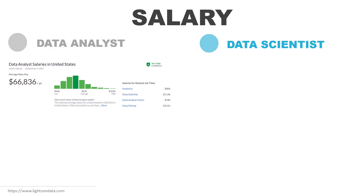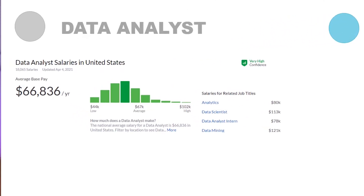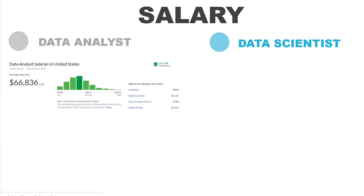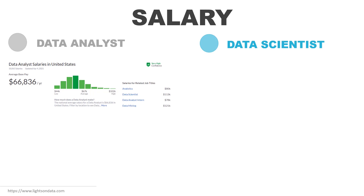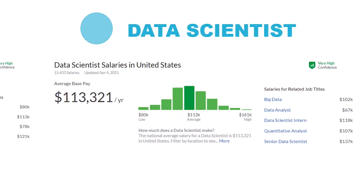Let's move on to the salary component. As there is a difference in the qualifications required and the scope of the work, the same can also be said for the salary for both roles. The average salary of a data analyst in the US, according to Glassdoor, is around $66,000–$67,000 per year. Given the scope of the work of a data scientist role, they earn significantly more money — Glassdoor averages this at $113,000 a year.